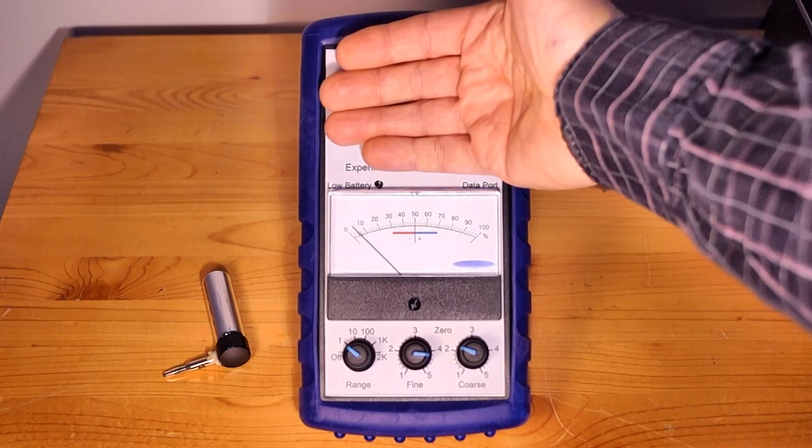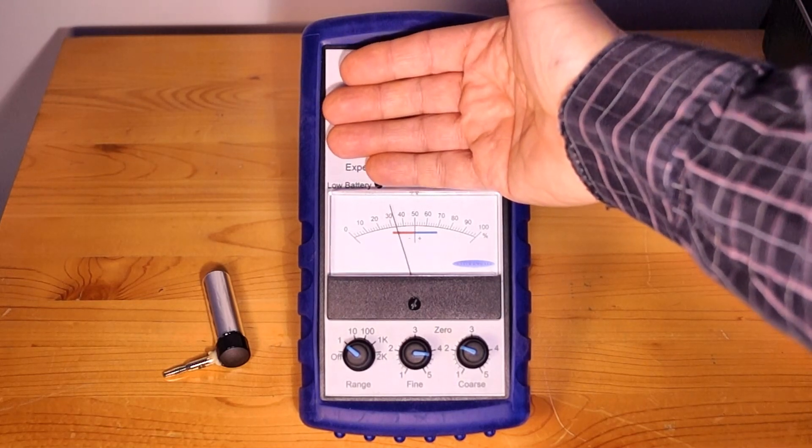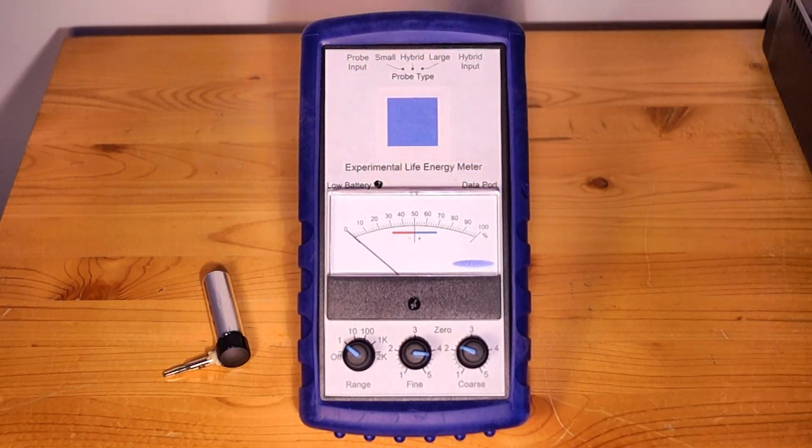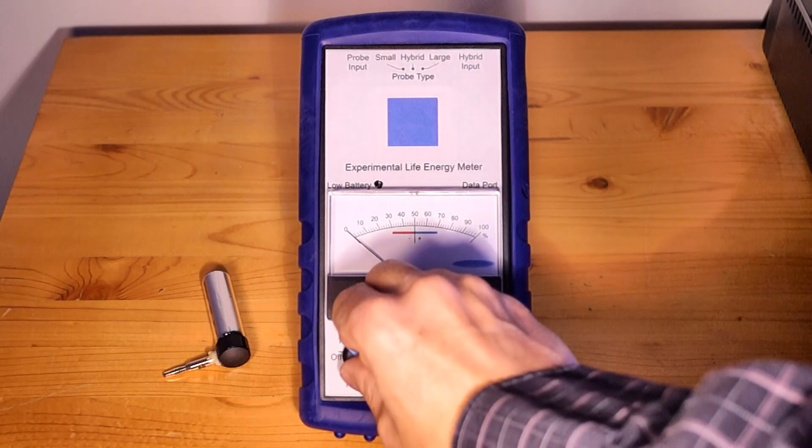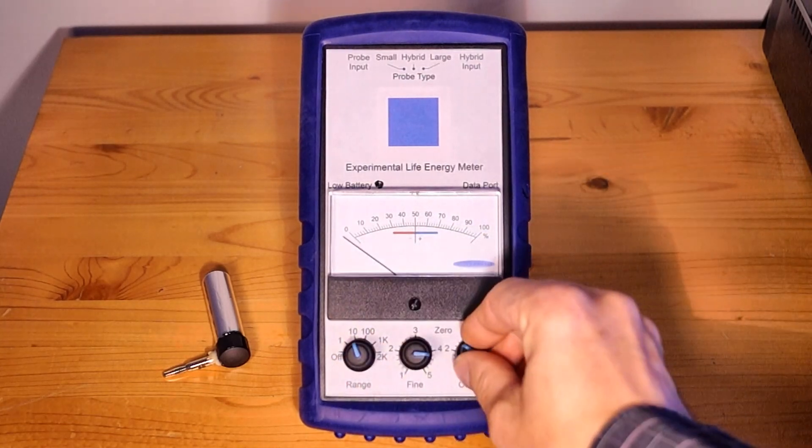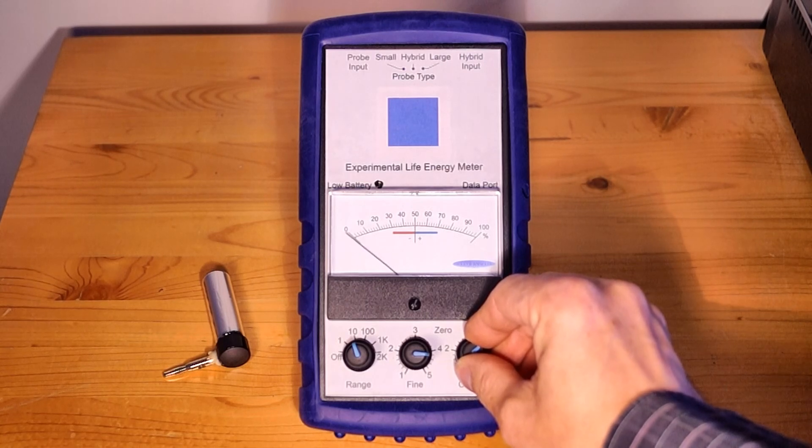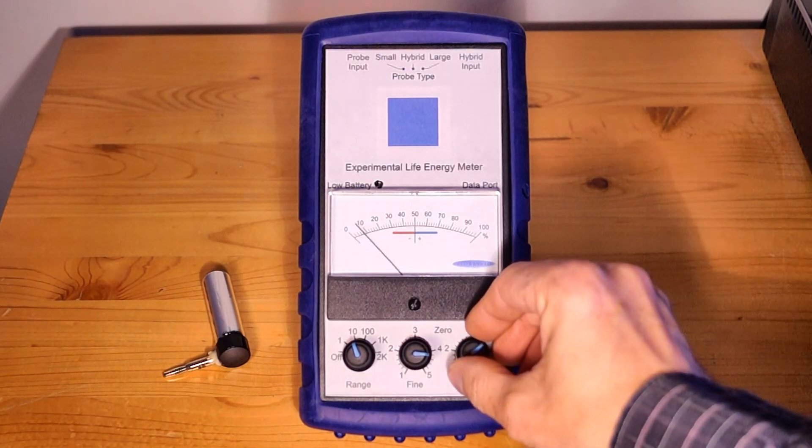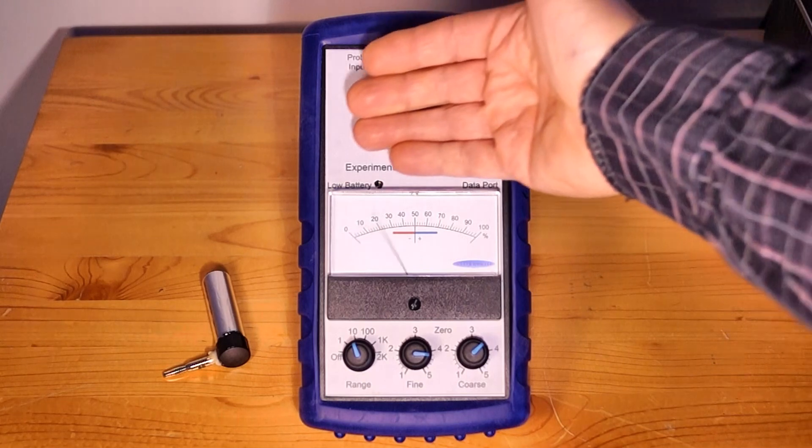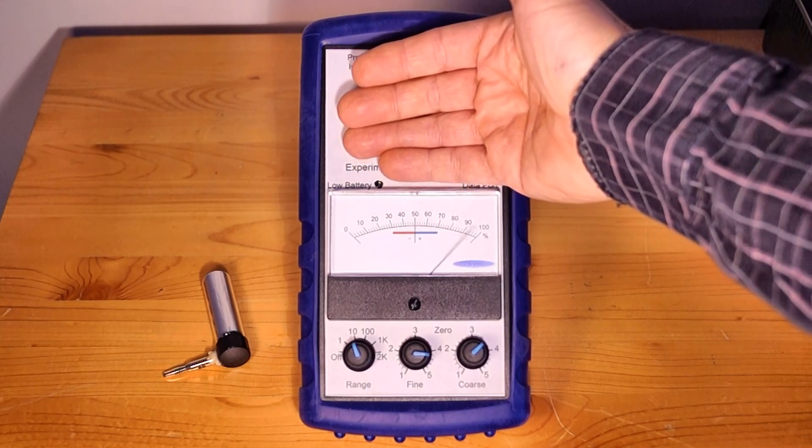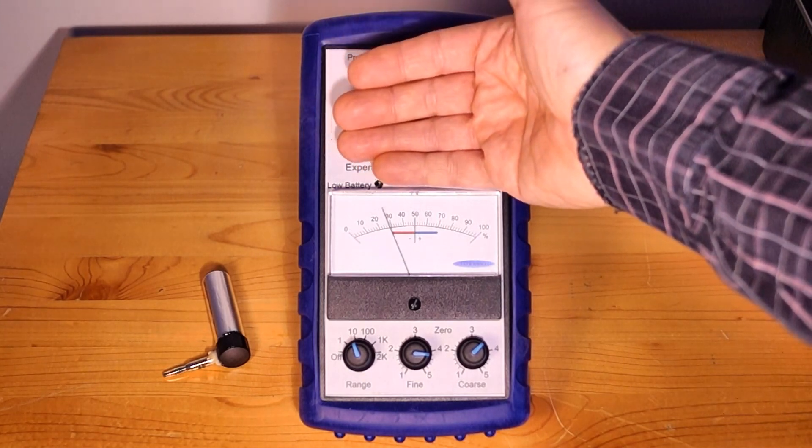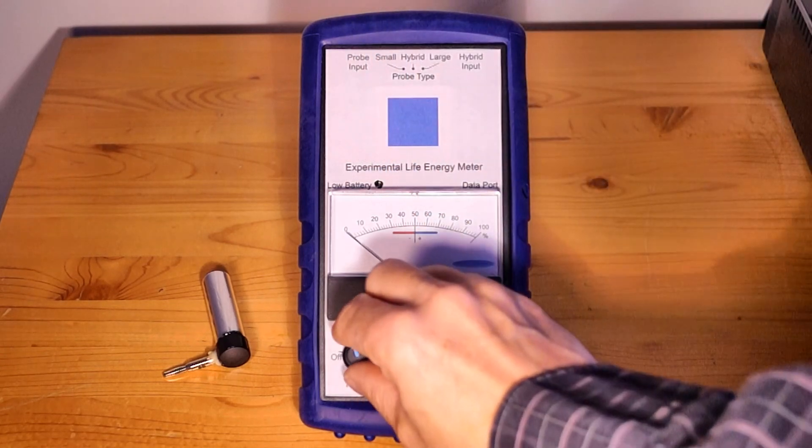Now as we approach the blue square with the hand, you can see that the needle deflects. We can now increase the range to times ten and adjust the zero once again. Now you can see that the sensitivity is higher and it detects the body field at a closer point.